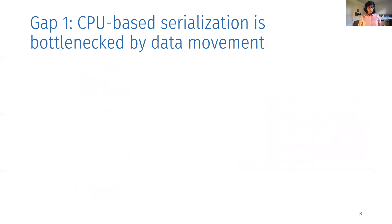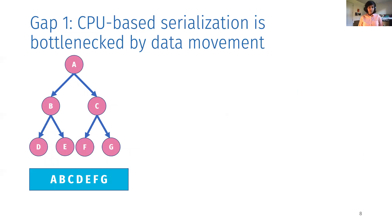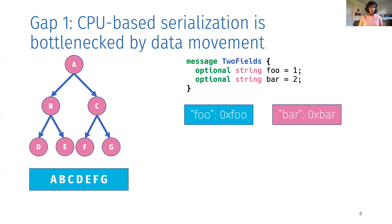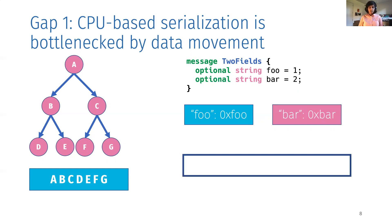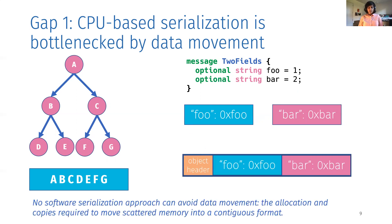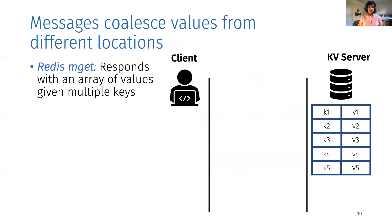First, CPU-based serialization is bottlenecked by data movement. Programmers like that data structures can be scattered in memory containing pointers — they like that they could modify this tree, adding or removing nodes, without having to reallocate all of the memory contiguously. The job of the serialization library is to then move everything into a contiguous memory format to be able to send over the network. Consider a simple message schema with two string fields. These fields live somewhere in memory, and the serialization library would have to allocate space to hold the two fields, write in an object header to index them, and copy the two fields into the allocated space. We refer to this copy and allocation as data movement, something that no software serialization approach can avoid.